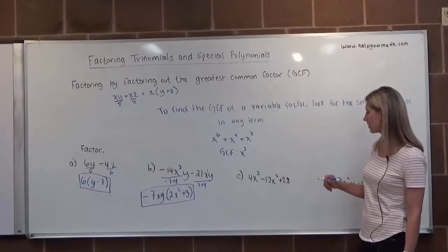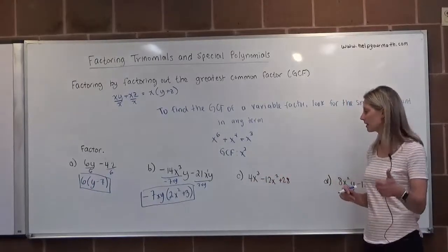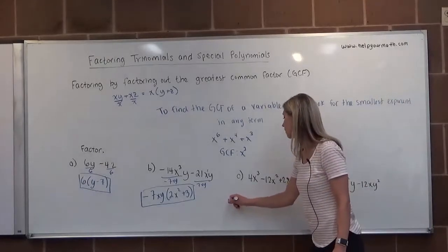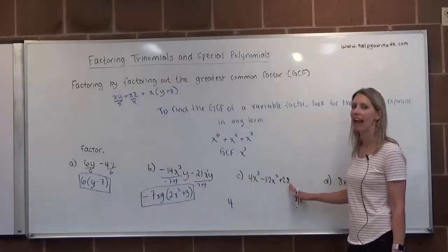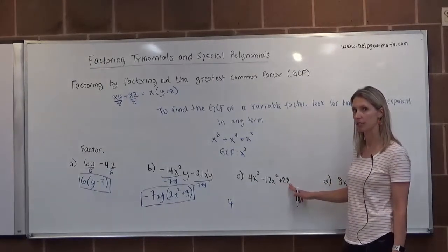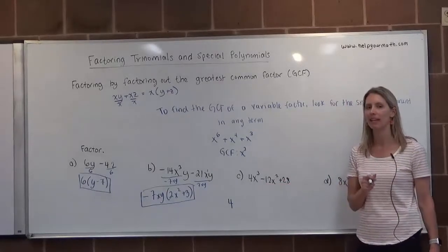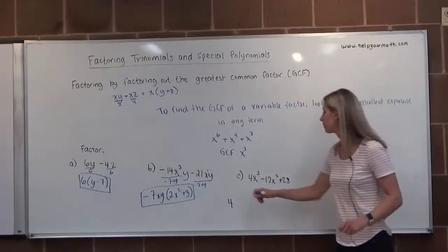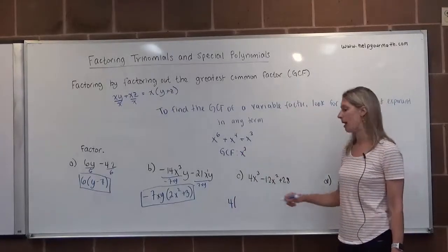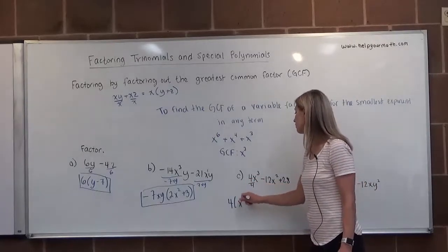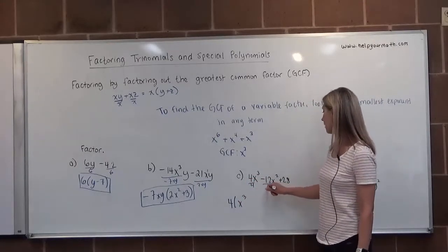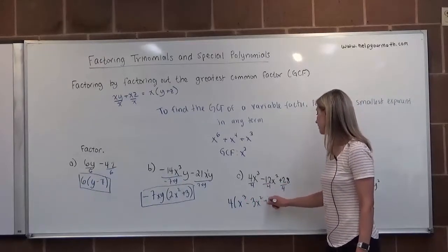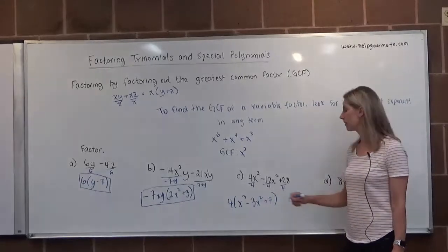Letter C: the leading term is positive. 4, 12, and 28 are all divisible by 4. However, x³ and x² appear in the first two terms, but the third term (28) has no x — so x is not part of the GCF since all three terms must share it. The only GCF is 4. Dividing all three terms by 4: 4x³÷4 is x³, negative 12x²÷4 is minus 3x², and 28÷4 is 7. The final factored form is 4(x³ minus 3x² plus 7).